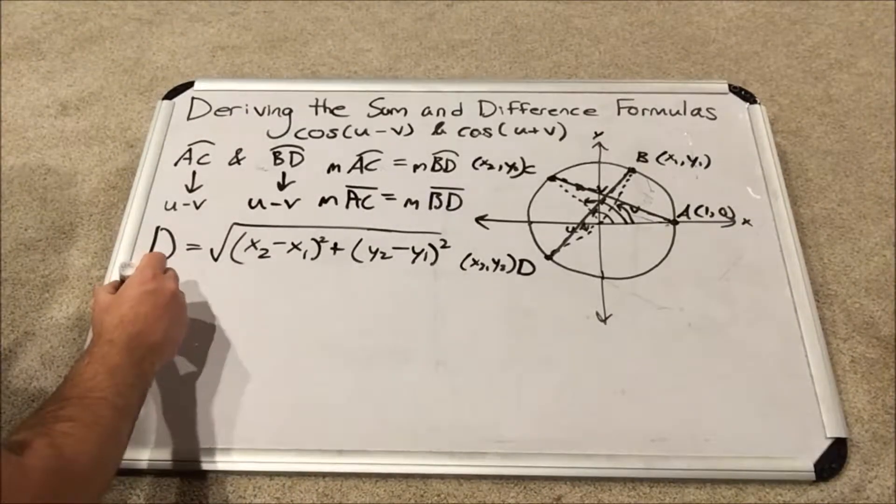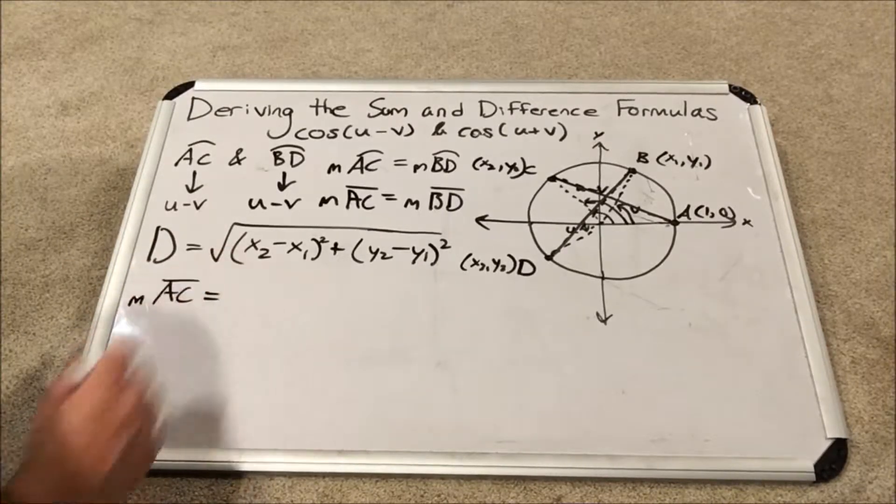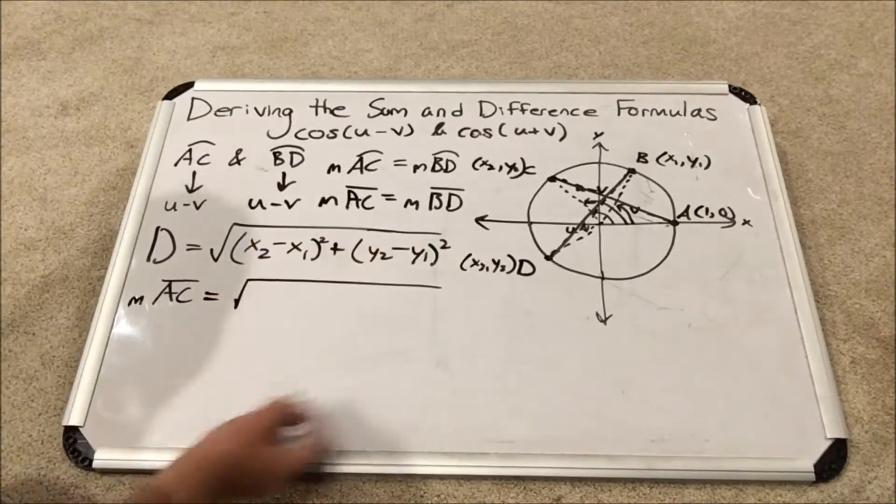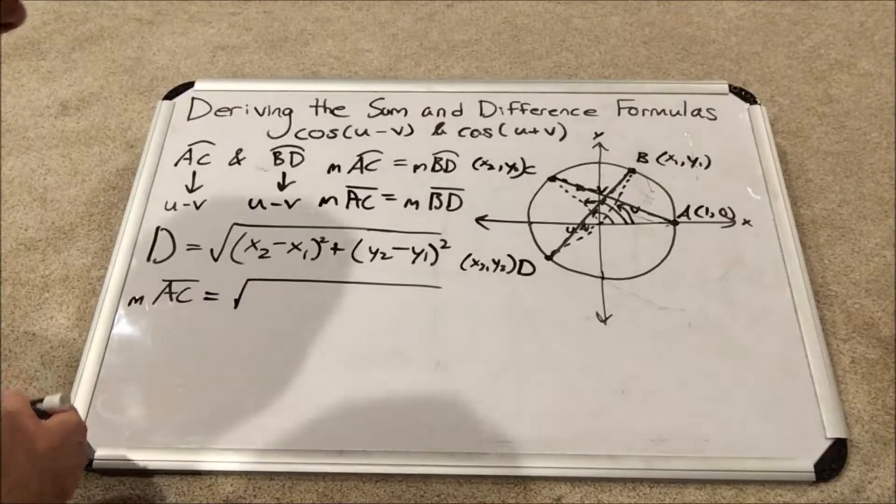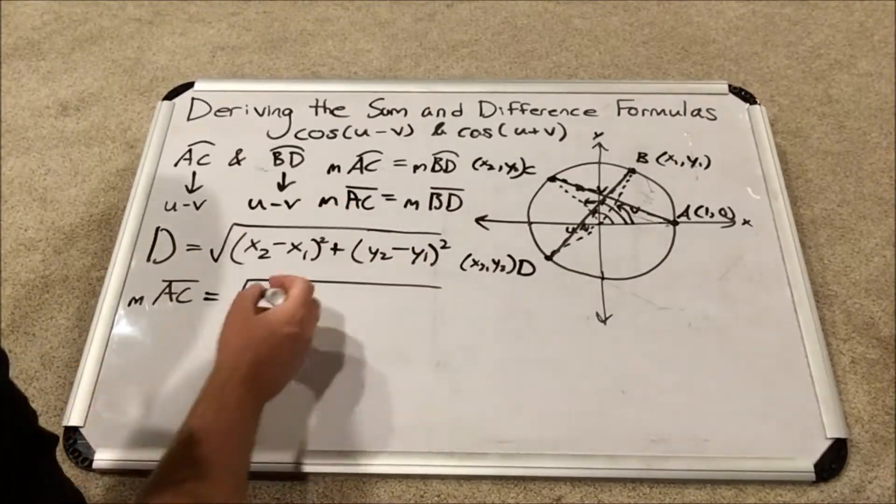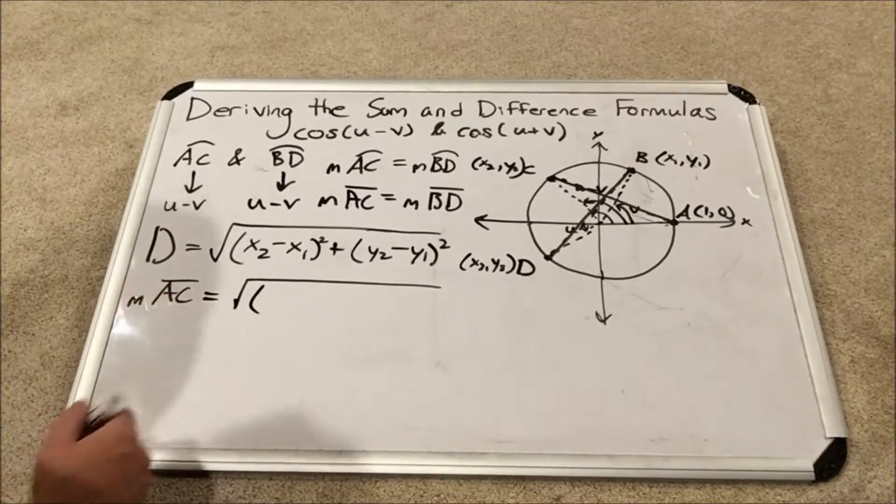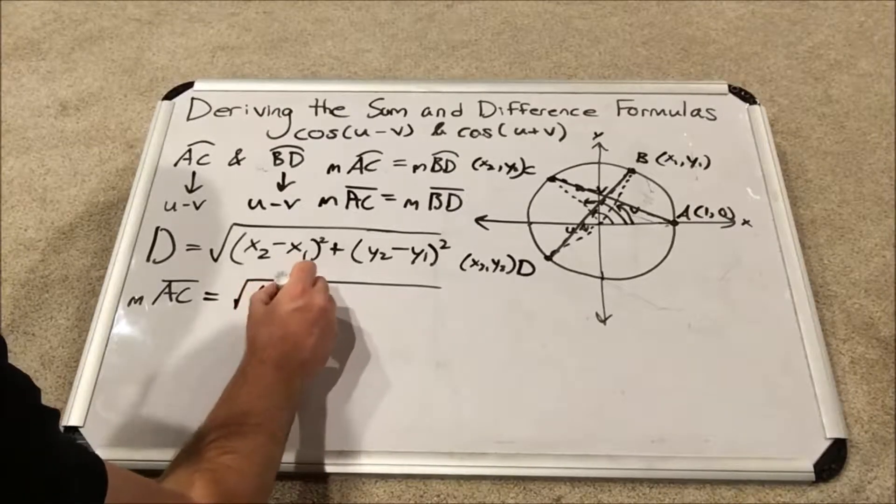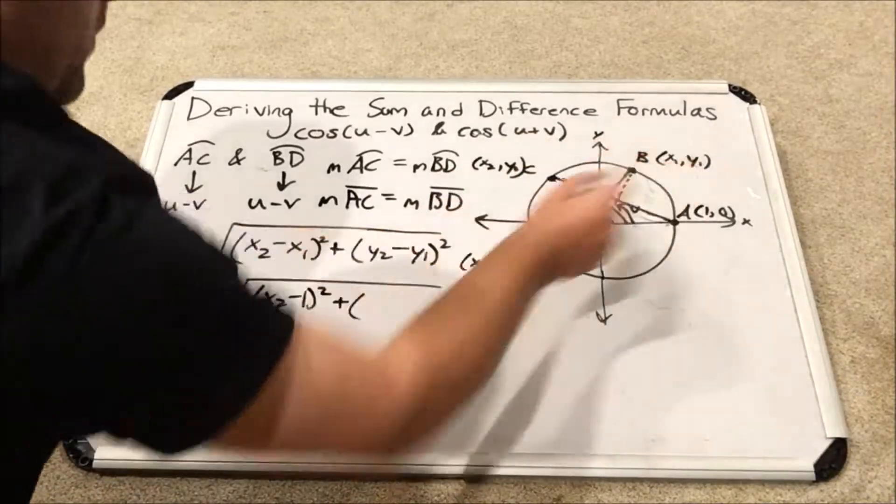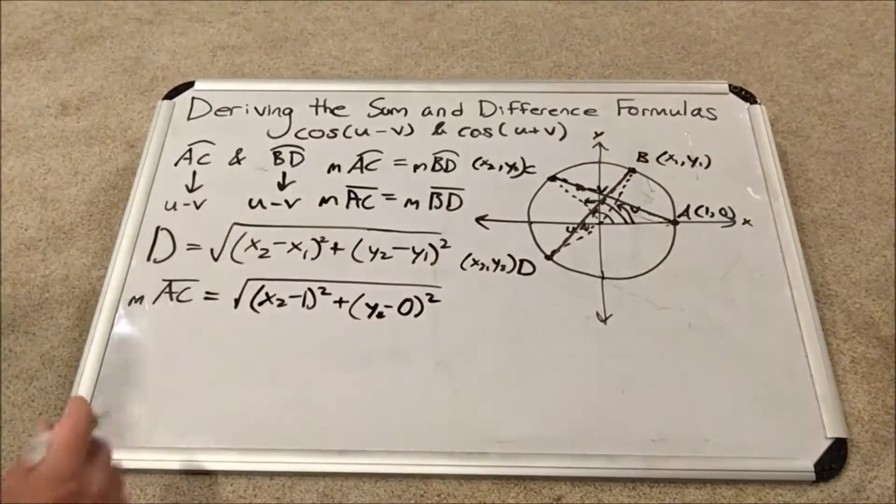The measure of chord AC using the distance formula will be, I'm going to treat point C as my second point and point A as my first point in this formula, so x2 minus 1 squared plus y2 minus 0 squared, which is just y2 squared.